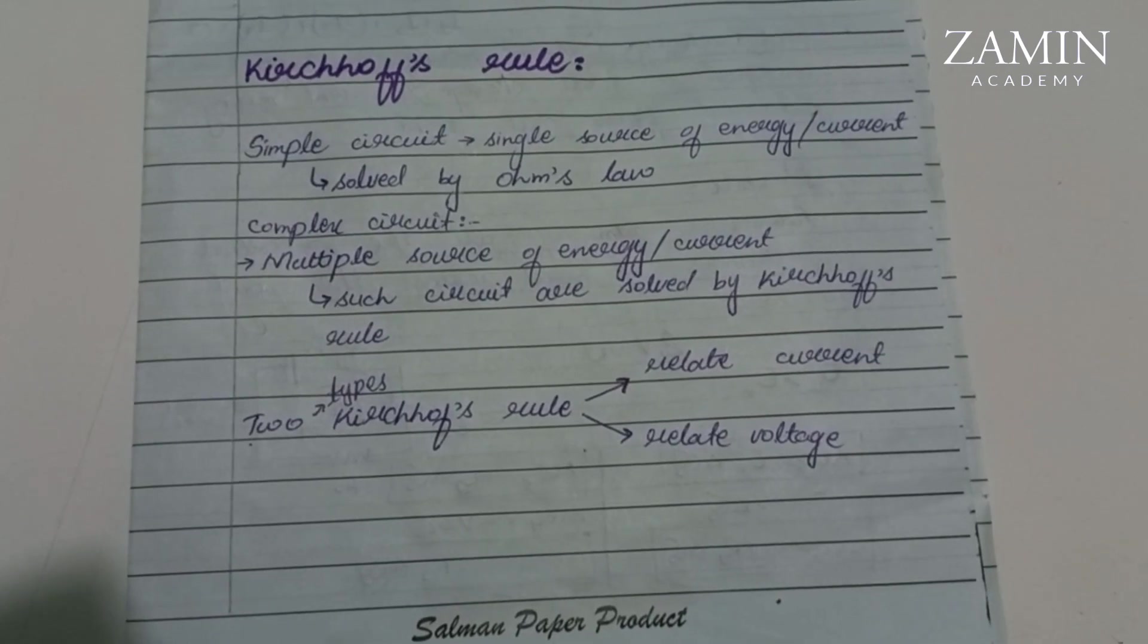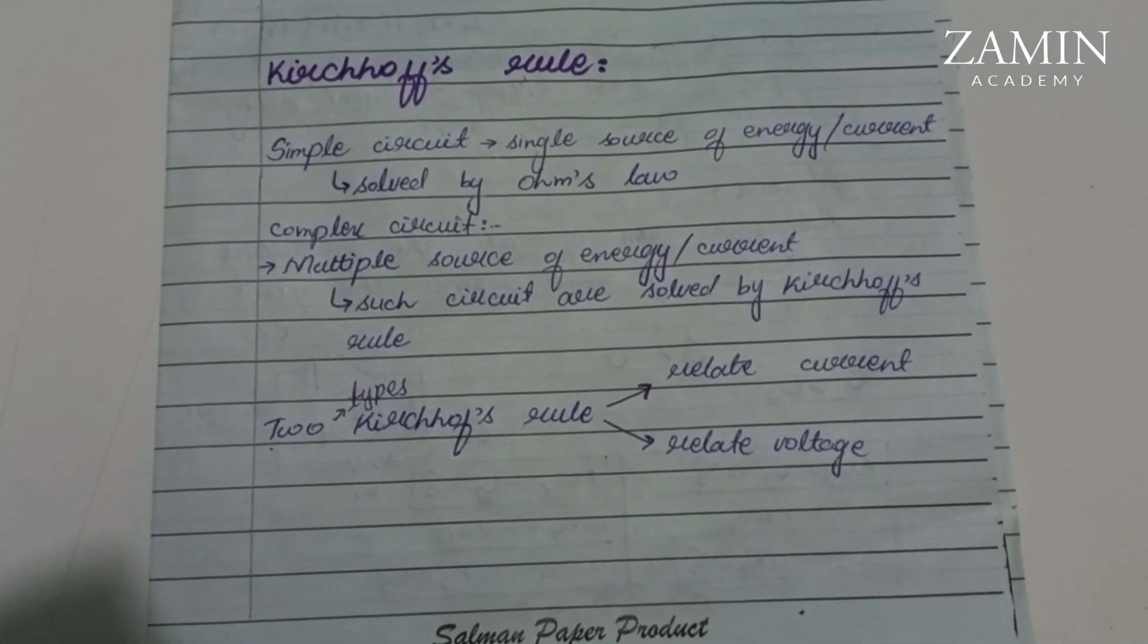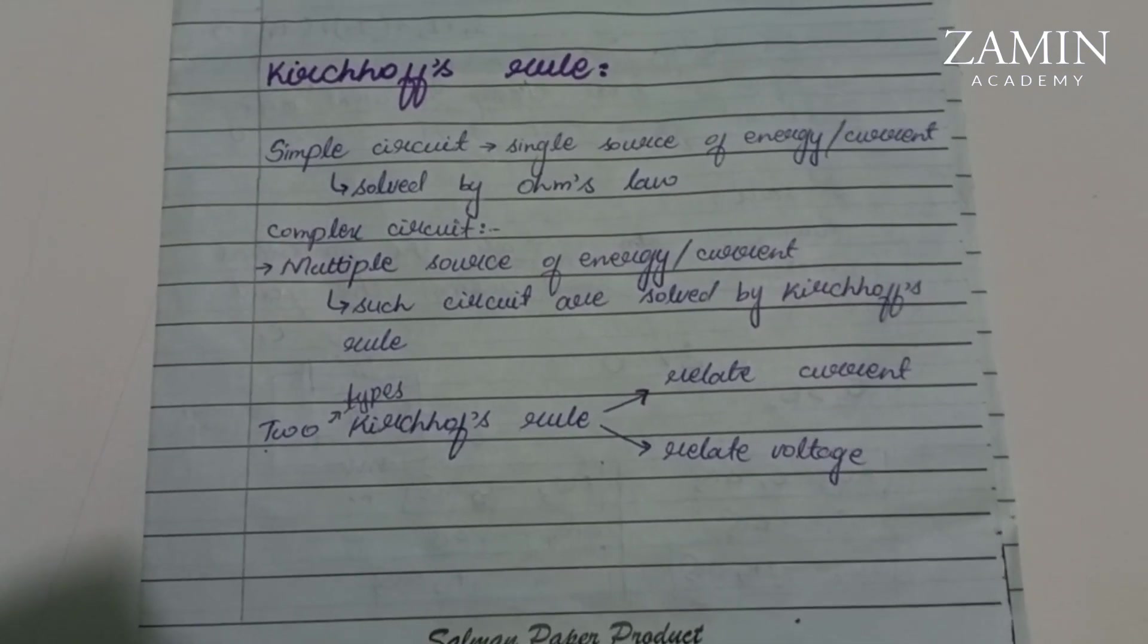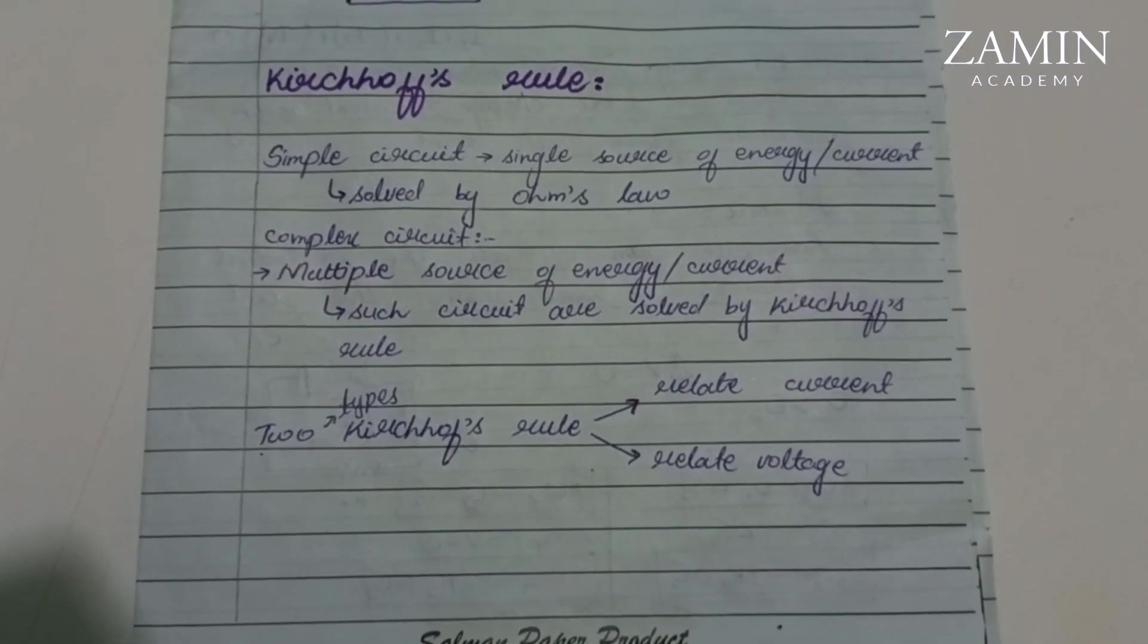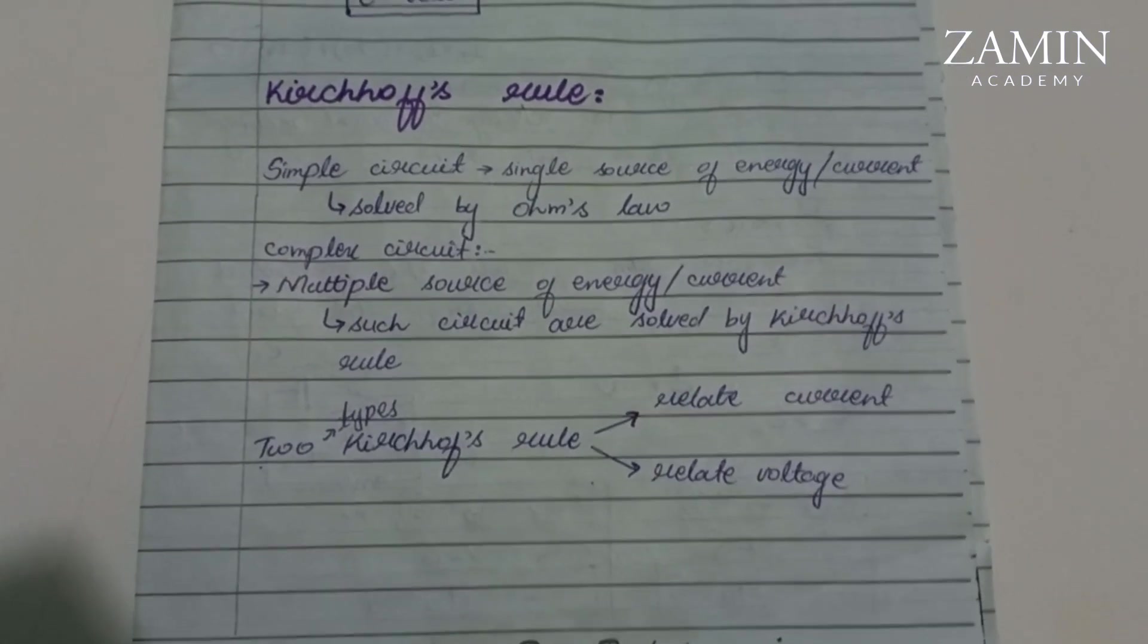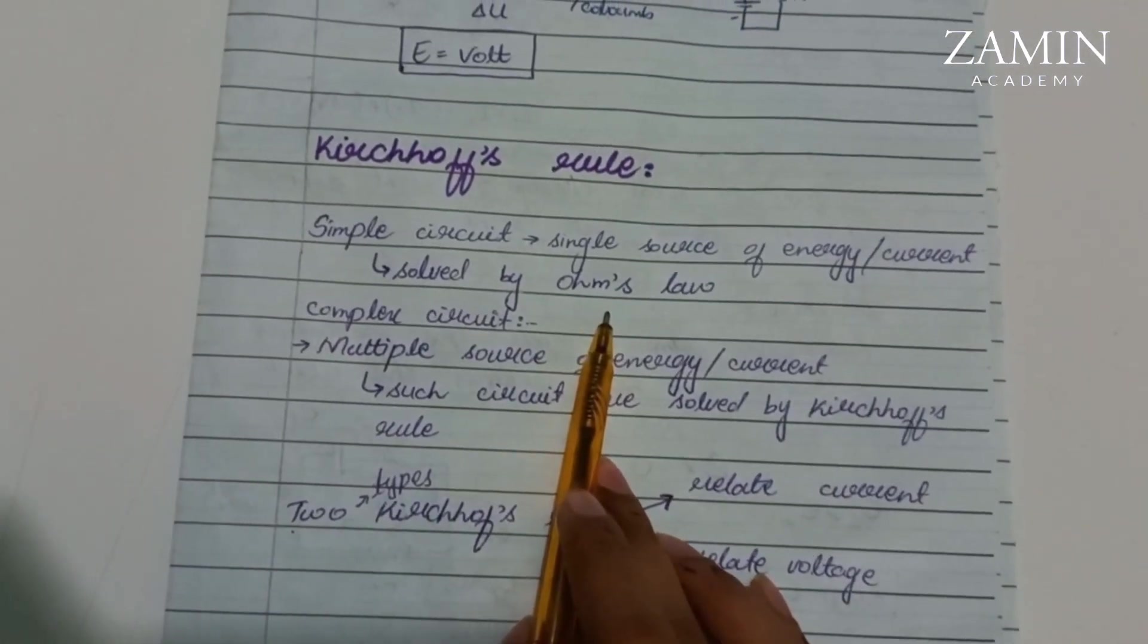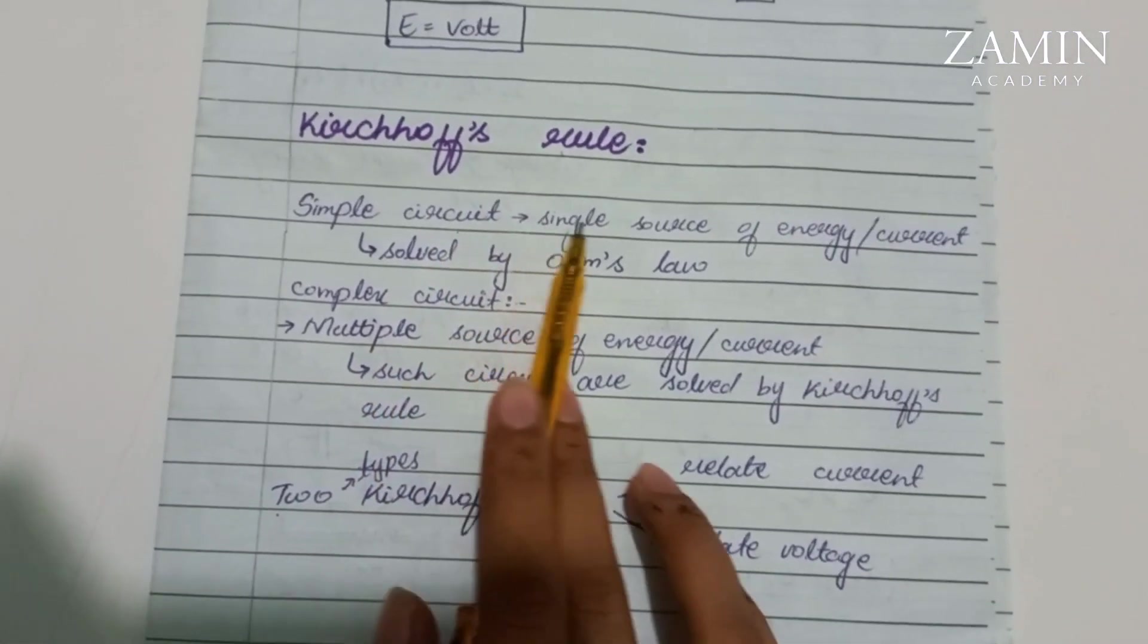Assalamu alaikum, welcome to Zamin's Academy. Today we will cover our last topic of chapter number two of intro physics, and this topic is Kirchhoff's rules. We use Ohm's law to solve simple circuits. A simple circuit is a single source of energy or current.